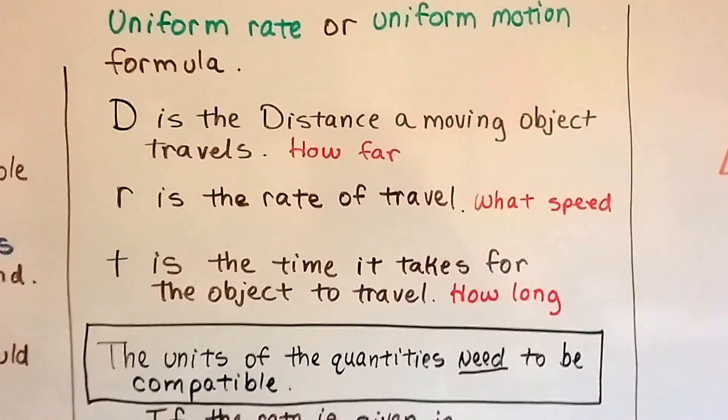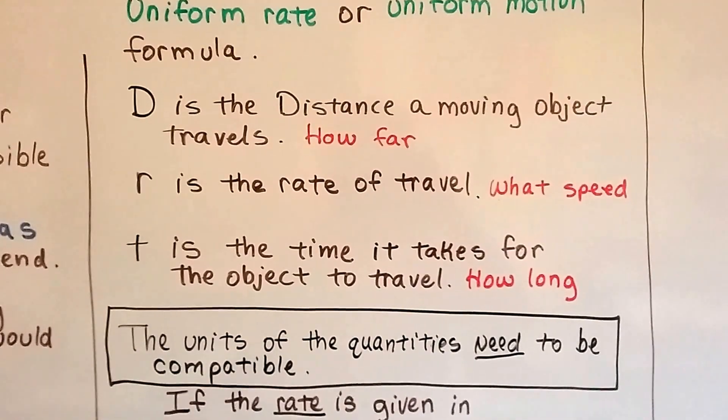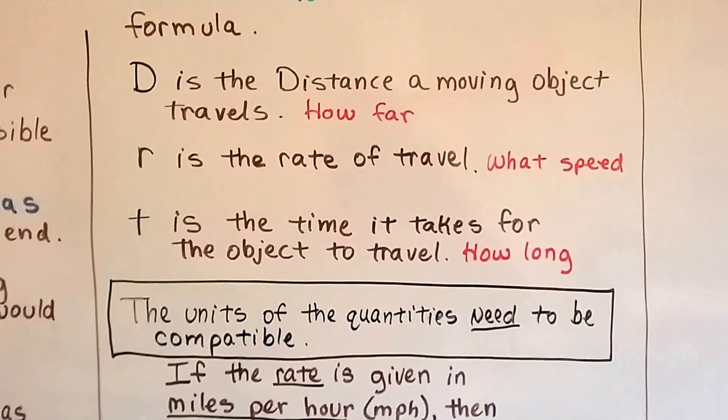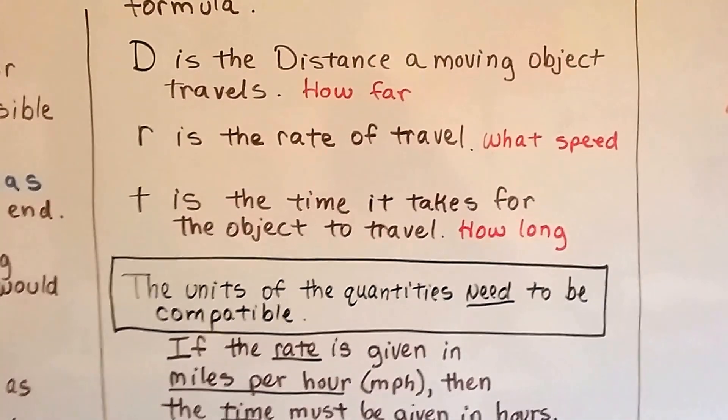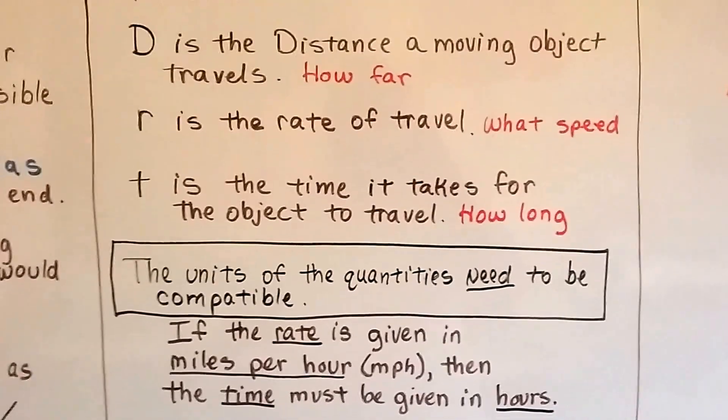Units have to be compatible. The units of the quantities need to be compatible. So if the rate is given in miles per minute, then our time must be in minutes.